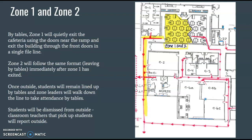By tables, Zone 1 will quietly exit the cafeteria using the doors near the ramp. Students will go out that door and out the front doors in a single file line. Once Zone 1 has been fully cleared, Zone 2 will go out those same doors by tables, and then in a line out the front door.